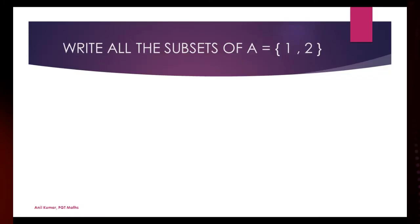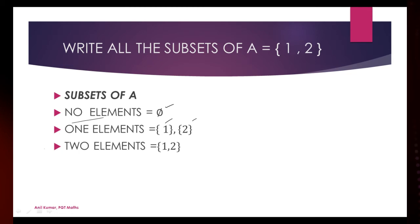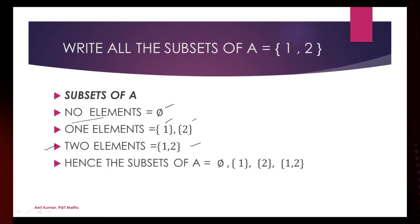Let's write all the subsets of set A having two elements, {1, 2}. First, the set with zero elements — that is the empty set. Then sets containing one element: {1} and {2}. And the set having two elements: {1, 2}. So how many total subsets did we get? We got four subsets.